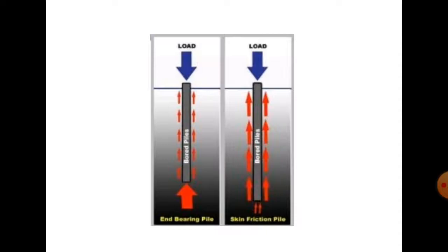In an end bearing pile, when load is applied on top, upward pressure is generated at the end. In a skin friction pile, when load is applied on top, skin friction is generated and the upward load is less compared to end bearing pile, because skin friction pile is generally used in soft soil. Next is sheet pile.